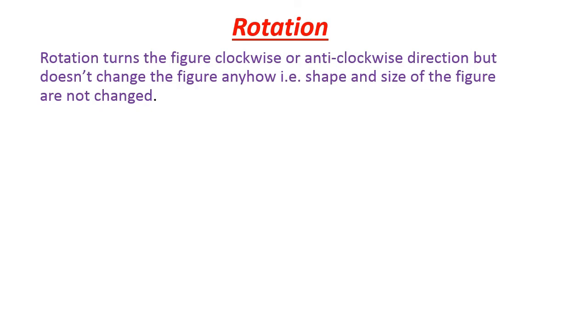Now we will go to rotation. Rotation is another type of transformation. Rotation means turning the figure in a clockwise or anticlockwise direction, but it does not change the figure — that is, the shape and size of the figure are not changed. Only the figure is turned in a clockwise or anticlockwise direction.